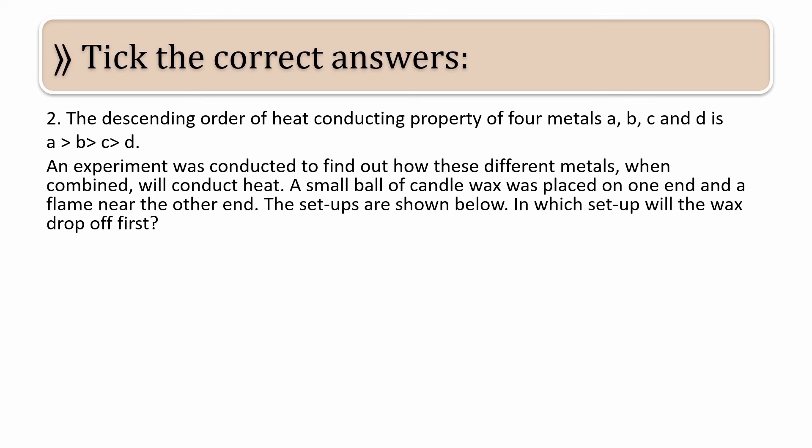Next question: The descending order of heat conducting property of four metals A, B, C, and D is A greater than B greater than C greater than D. This is arranged in descending order, meaning A has the highest heat conducting property, followed by B, then C, and D has the lowest heat conducting property.